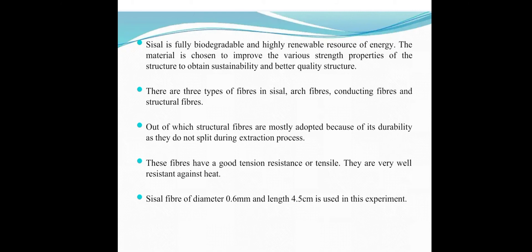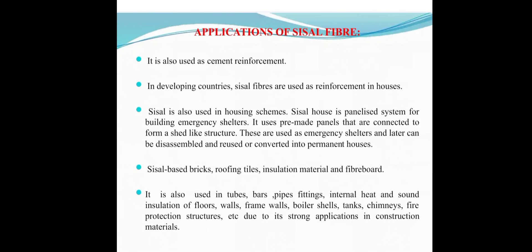Sisal is used by itself or blended with wool and acrylic for a softer hand, and is used by many corporates for carpets and indoor decoration. Sisal is fully biodegradable and a highly renewable resource. There are three types of fibers in sisal: arc fibers, conducting fibers, and structural fibers. Of these, structural fibers are most widely adopted because of their durability — they do not split during the extraction process. These fibers have good tensile strength and heat resistance. The diameter is 0.6 mm and length is 4.5 cm as used in experiments.